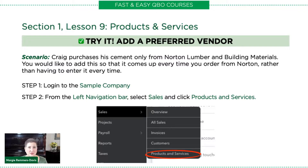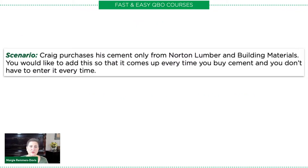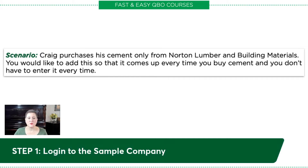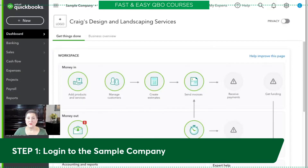Let's go ahead and get started by reading our scenario. Craig purchases his cement only from Norton Lumber and Building Materials. You would like to add this so that it comes up every time you buy cement and you don't have to enter it every time. So the first thing we're going to do is log into the sample company. If you don't know how to access the sample company, there's information about that in the links below as well.